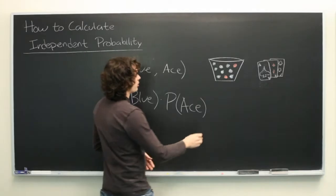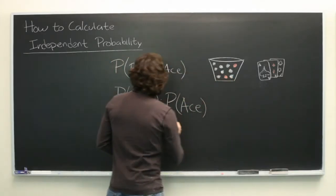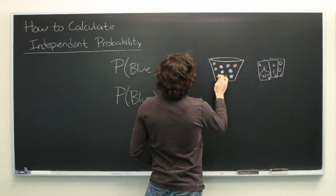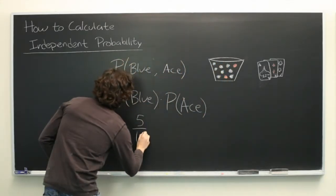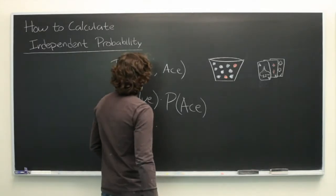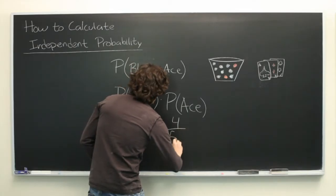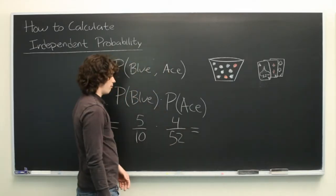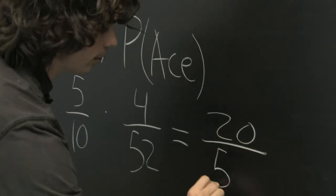And that's all there is to it. Here we can go ahead and compute this. We have five blue balls out of ten total, times four aces in a deck out of 52 cards total, which gives us a probability of 20 over 520.